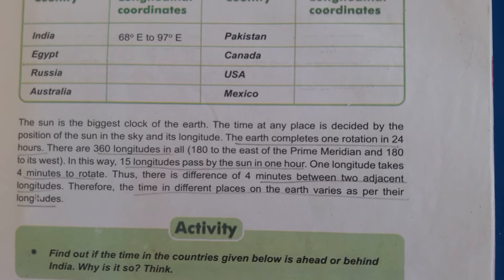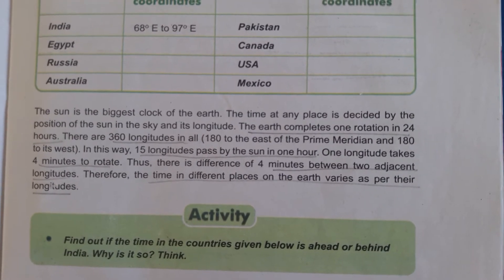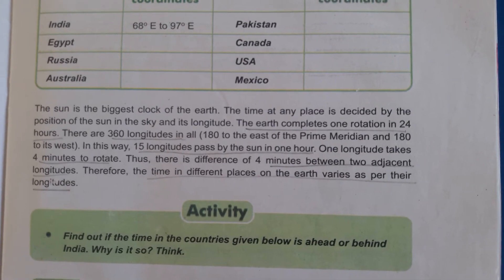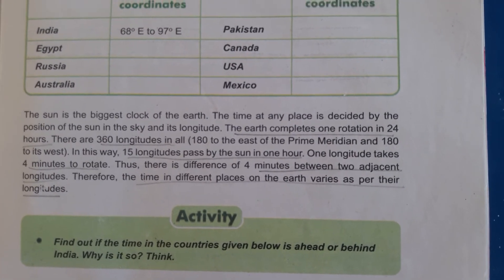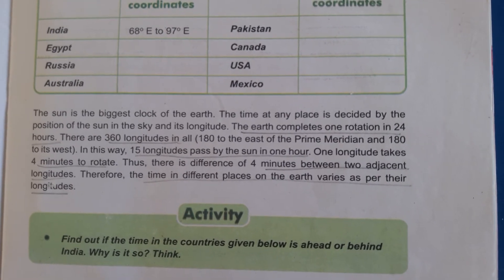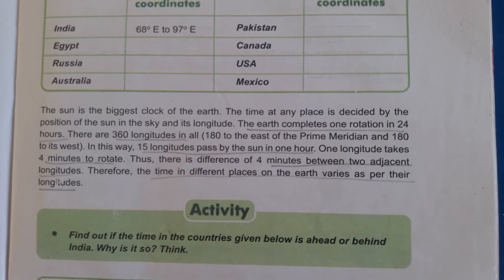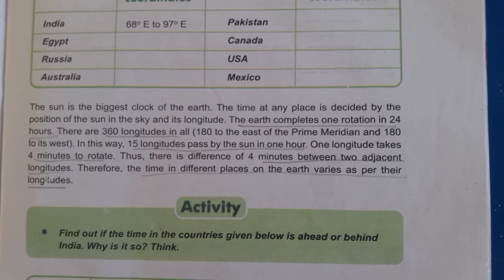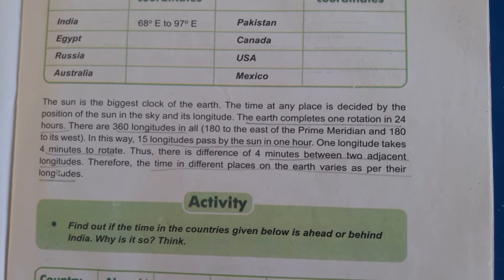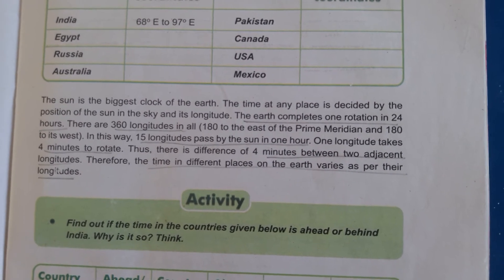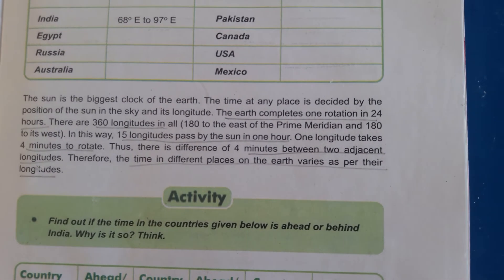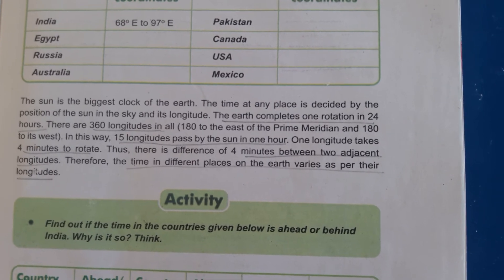There are 360 longitudes in all — 180 to the east of the prime meridian and 180 towards the west. So, in this way, 15 longitudes are passed by the sun in one hour. When the earth completes its rotation in 24 hours, 15 longitudes pass by the sun in one hour. Therefore, one longitude takes four minutes to travel, meaning there is a difference of four minutes between two adjacent longitudes.